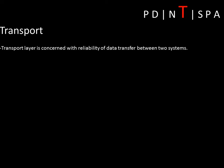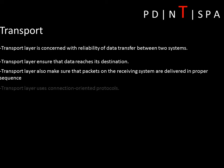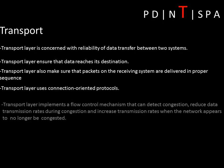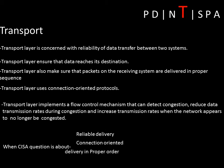T stands for Transport. This layer handles reliability of data transfer. It also ensures the sequence in which packets are delivered. Transport layer uses connection-oriented protocols and helps in congestion control. So when a CISA question is about reliable delivery, connection-oriented protocols, delivery in proper sequence, or congestion control, your answer should be Transport layer.